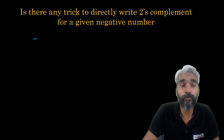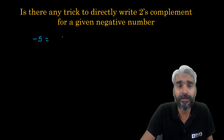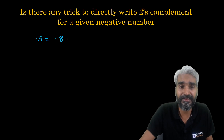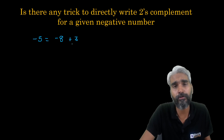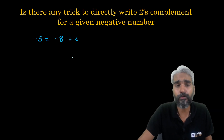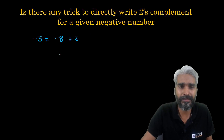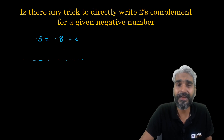If you want to write minus five, observe which number is greater than five and also a power of two. That number is eight. So if we say minus eight, what value added to minus eight equals minus five? Three. So three added to minus eight equals minus five. Now let's represent minus five in eight-bit two's complement format.